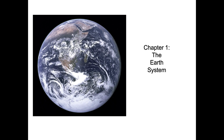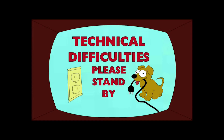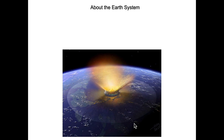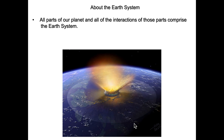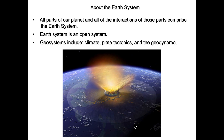What the earth system is, how it behaves, and what's in it for us. I've cleared the sound booth of Kuhn. Some things to know about the earth system: all parts of our planet and all the interactions of those parts comprise the earth system. The earth system is an open system. Geosystems include climate, plate tectonics, and the geodynamo. We'll discuss all of these things as the course progresses.